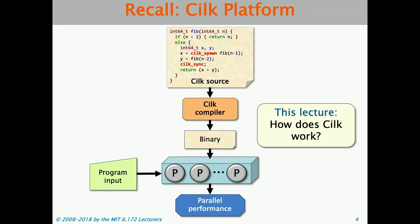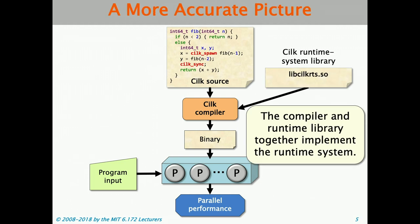You've all been using the Cilk platform for a while. In its basic usage, you write some Cilk code, feed it to a compiler, get a binary, run the binary on a multi-core system, and get parallel performance. Today we're going to look at how exactly Cilk works — what's the magic hidden by the boxes on this diagram. The first thing to note is that it's not really just Cilk source and the Cilk compiler. There's also a runtime system library, libcilkrts.so.